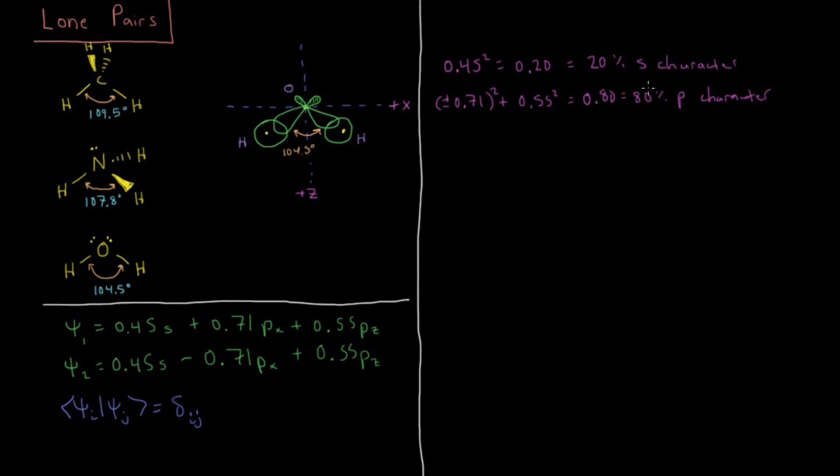And in fact, it approaches 100% p character as the bond angle approaches 90 degrees. And we wouldn't need any hybridization at all, those would just be the lone p orbitals themselves.